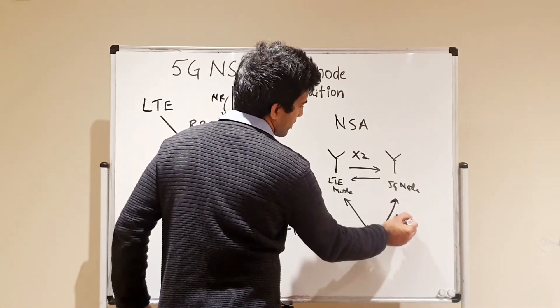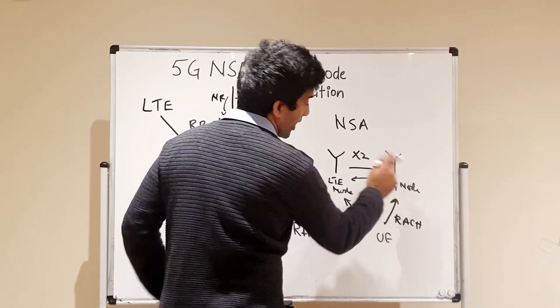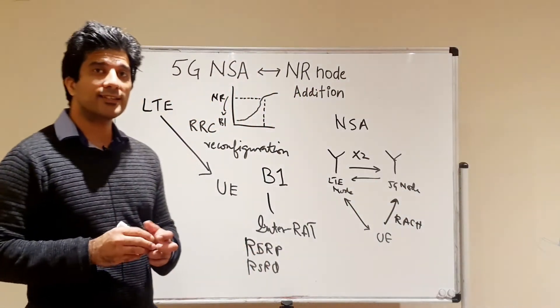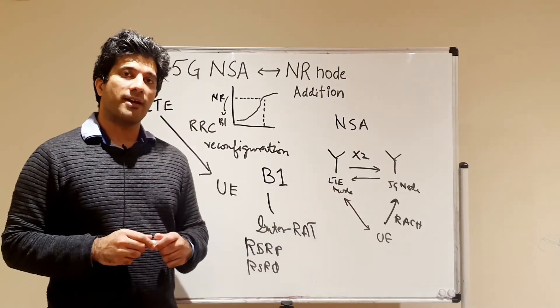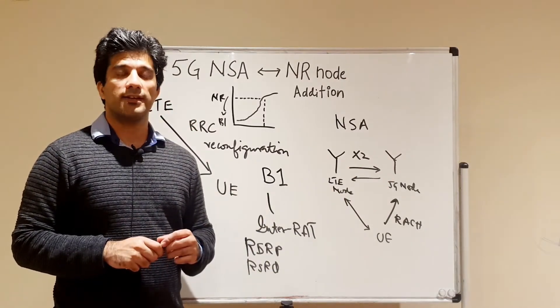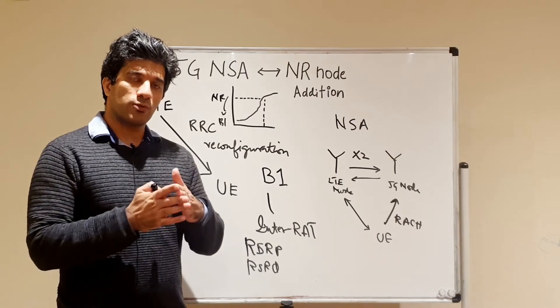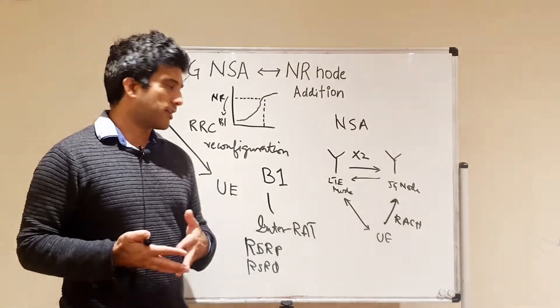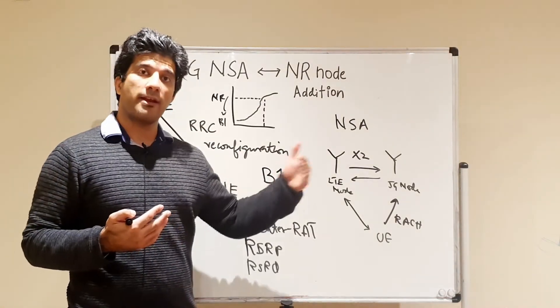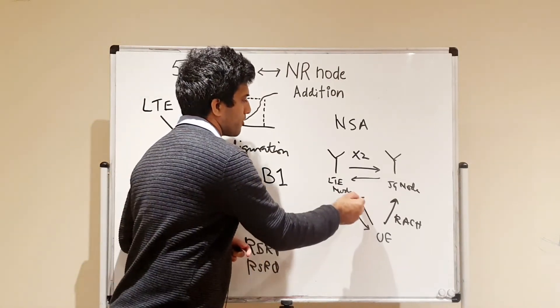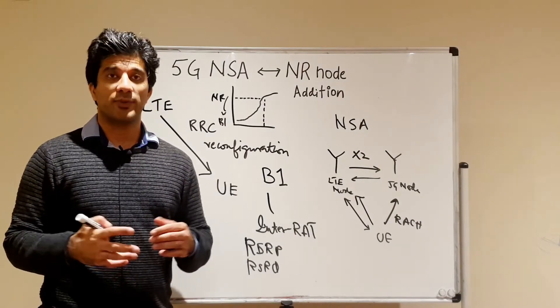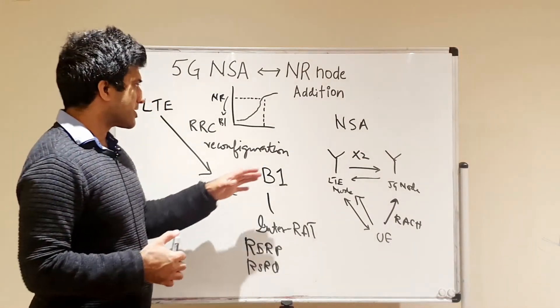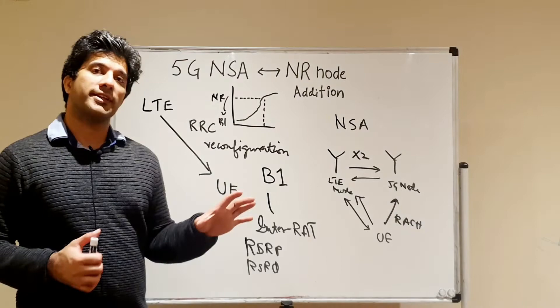Once the RSRP of NR cell touches B1, then your UE will start measuring it and it will start to attempt a RACH. The UE then from here will send a RACH to NR. After sending that RACH it will get a feedback or a response from the NR cell, and once those processes are complete, once the UE has set up an NR leg, then it will send a message back to the LTE node that the secondary node of NR has been added.